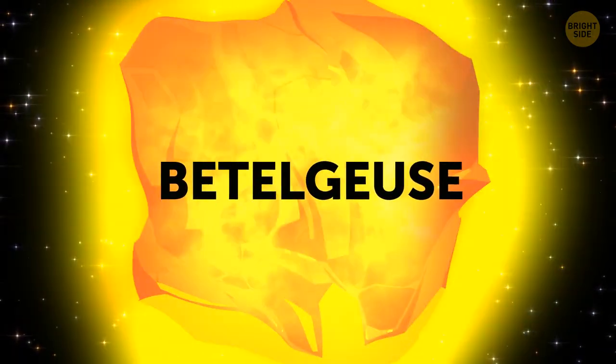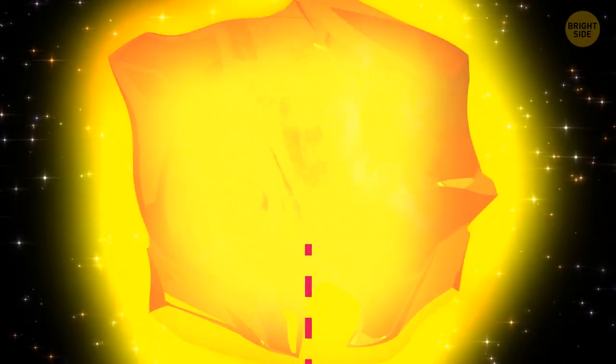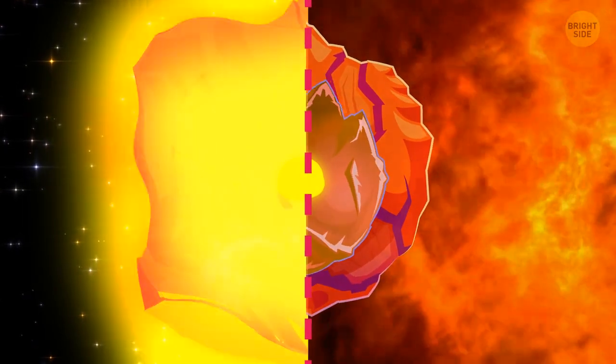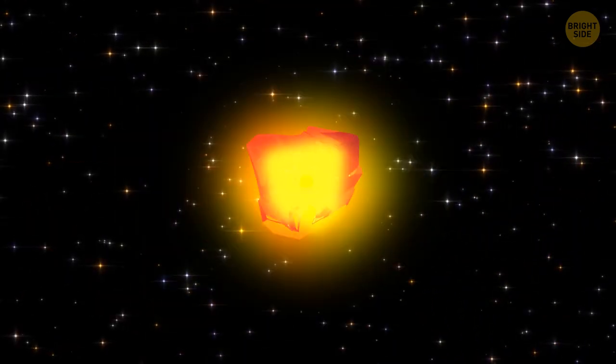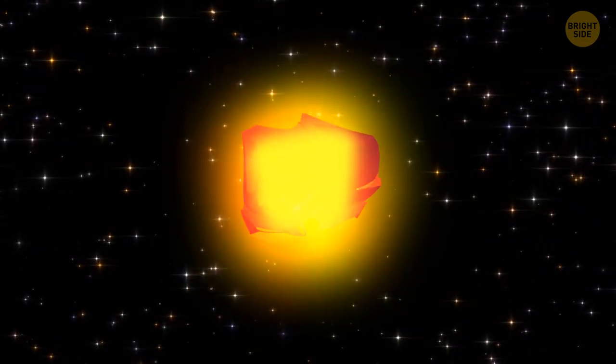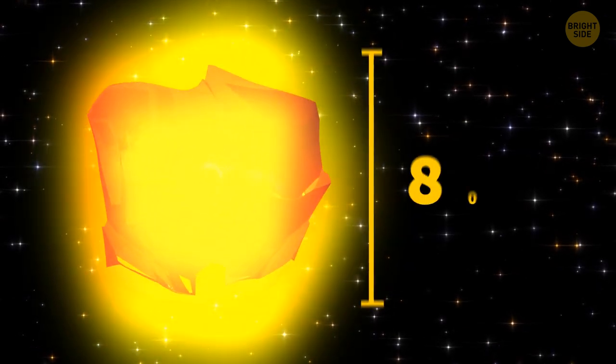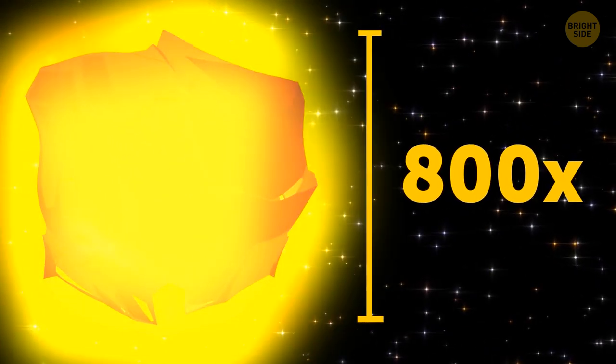Betelgeuse, a red supergiant. This ball of boiling plasma is one of the largest stars in our galaxy, and one of the brightest. It's about 500 times larger than the sun. But Betelgeuse is pulsating, getting bigger and smaller. At its peak, it becomes 800 times its average size.